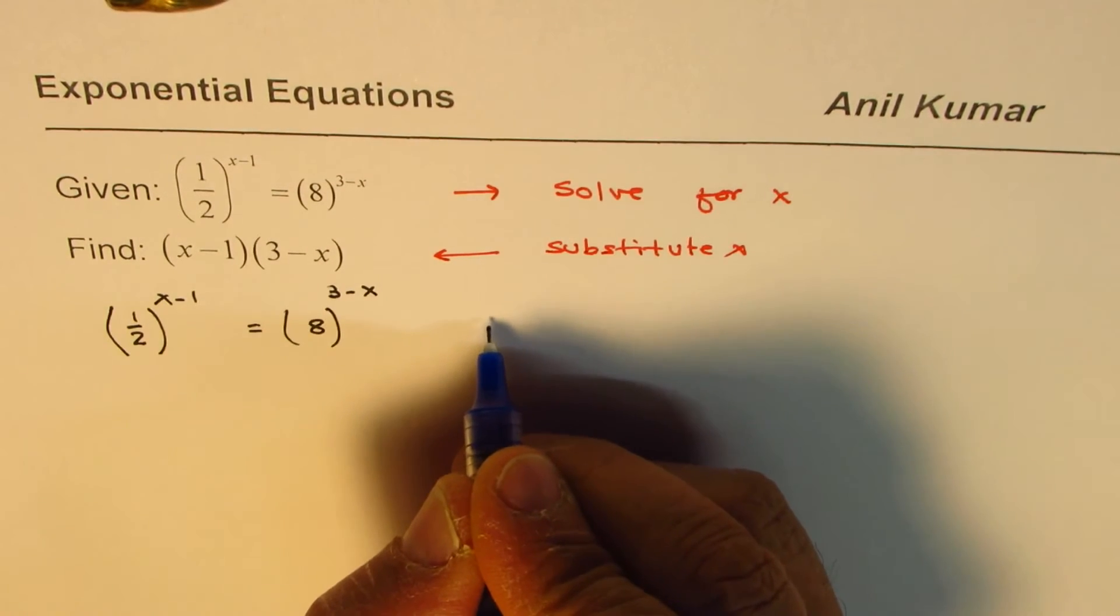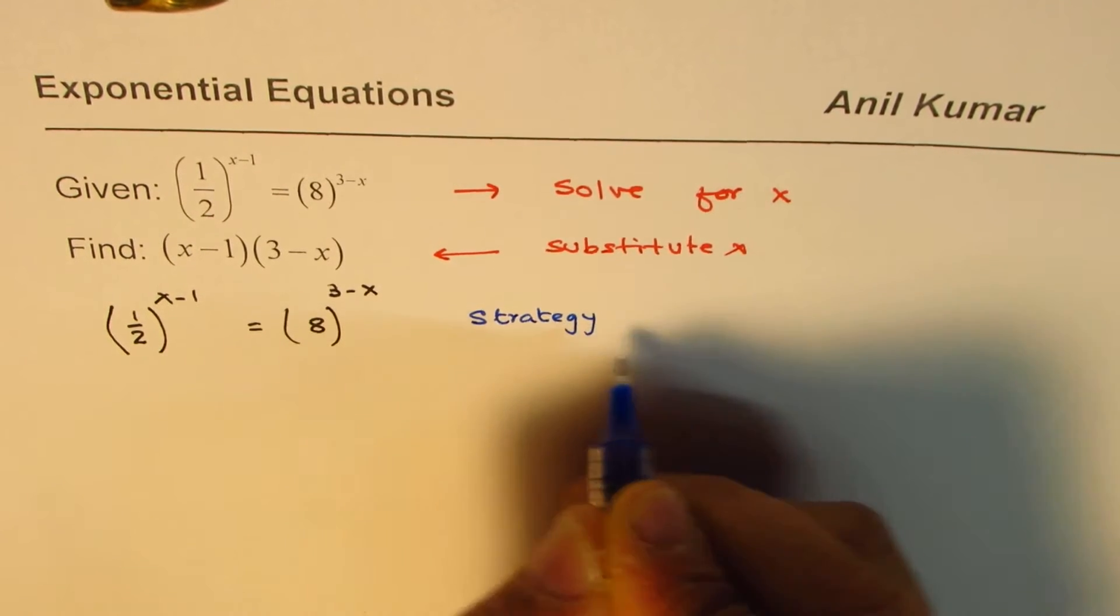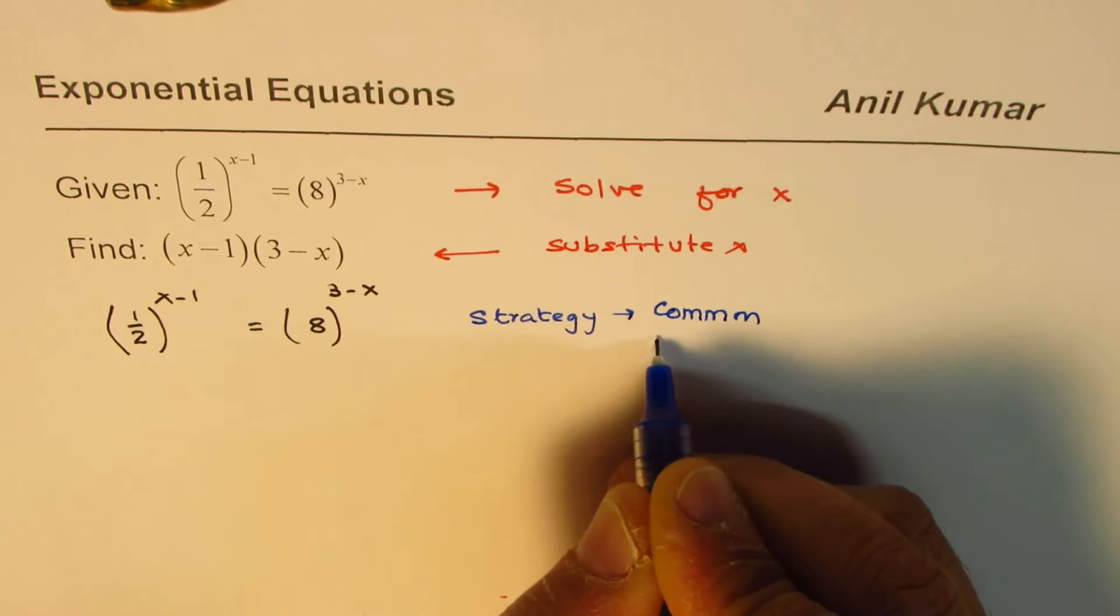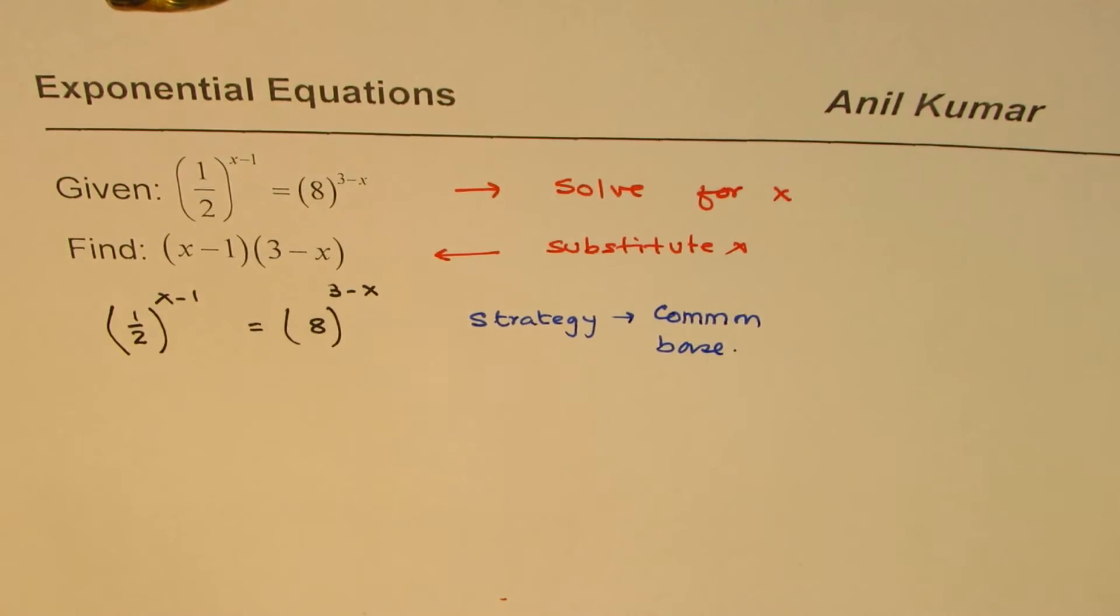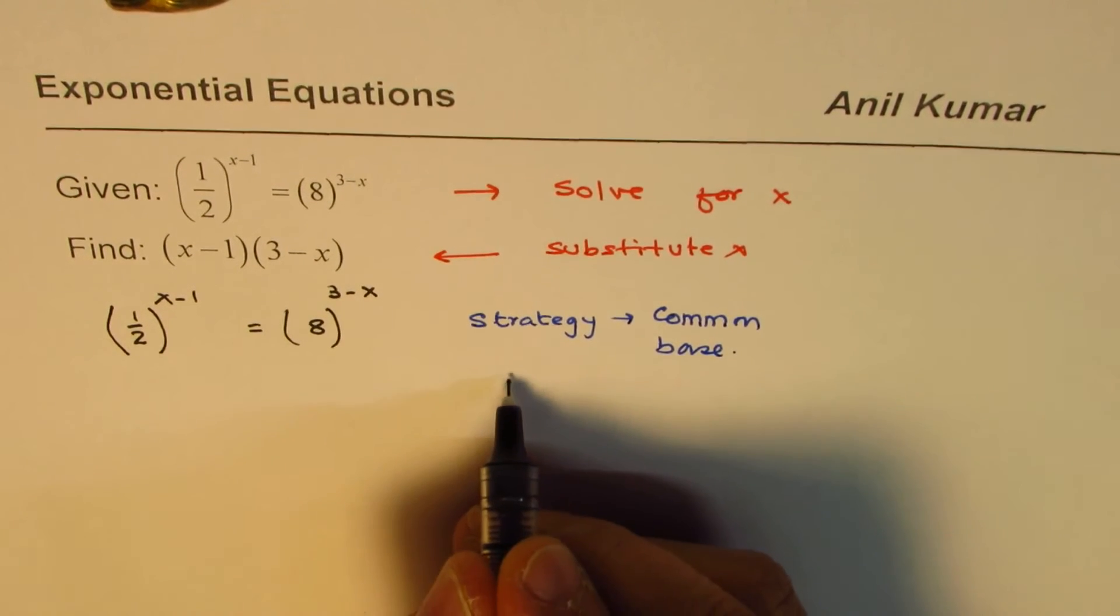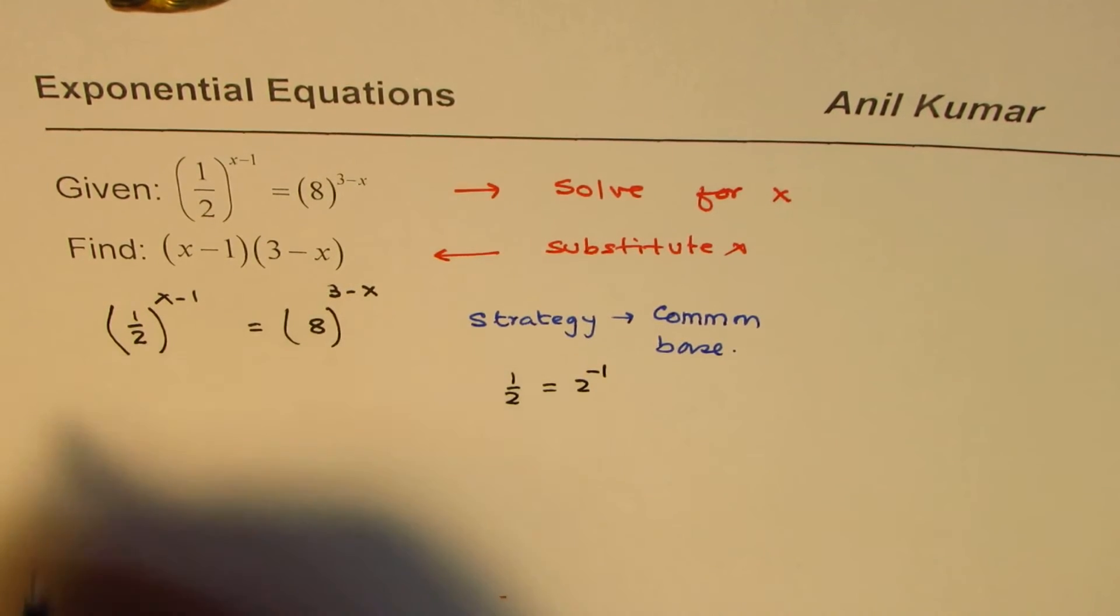So the strategy, let me write down strategy, is to have common base. Okay, and then we'll compare the exponents. So base could be 2, right? So if I make this, half could be written as 2^(-1). This is what I'll do here.